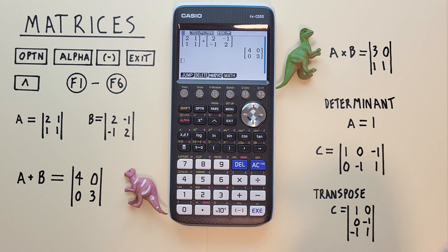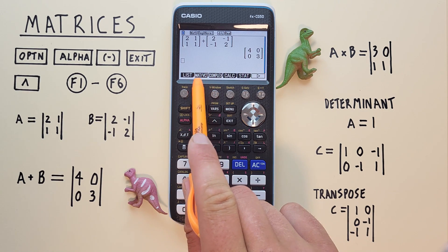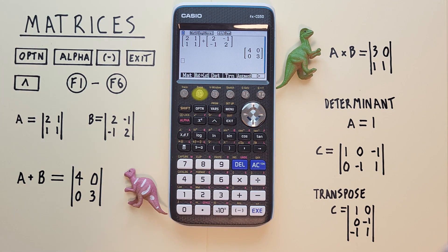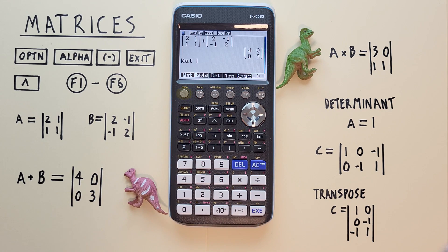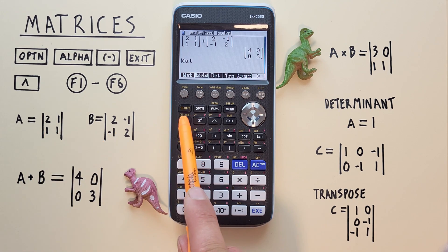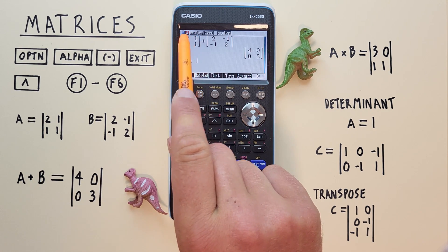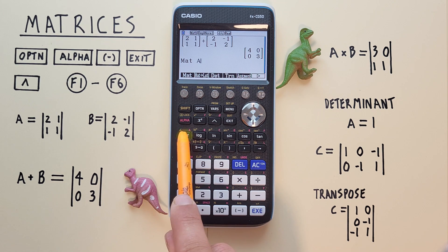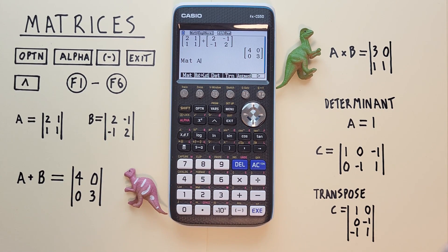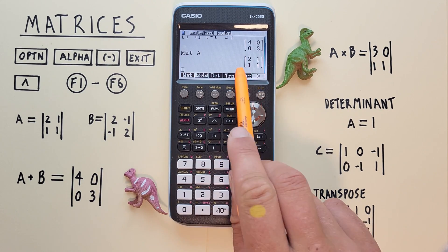Now let's say we want to recall our matrices and work with them. To do that we hit the option key and then F2 matrix vector. And choose matrix with F1 so that MAT appears. Now we remember our A matrix was saved as A. So we use the alpha key and the A appears there, letting us know we're in alpha mode. Then we hit the key with the red A above it so we now see matrix A. If we hit EXE, we see we've recalled our matrix A.